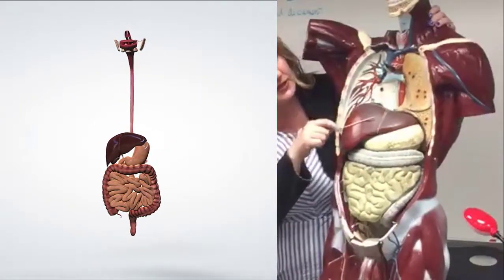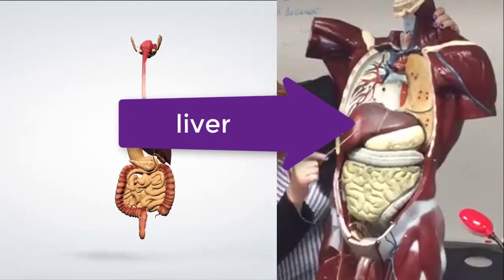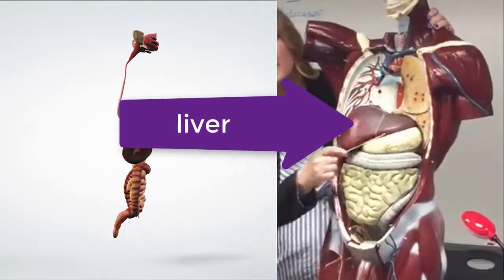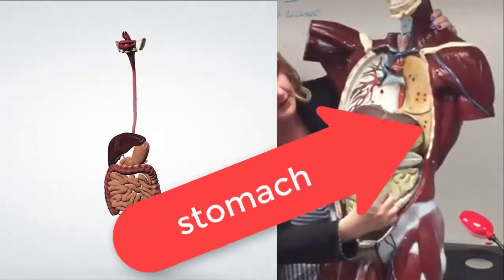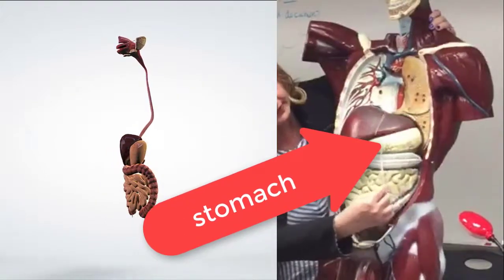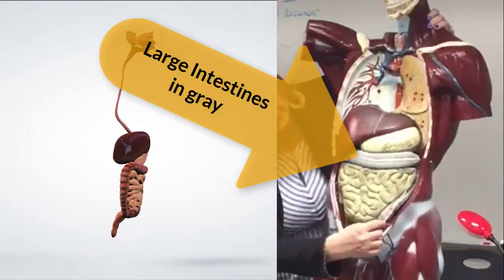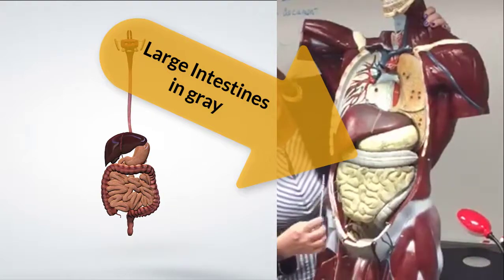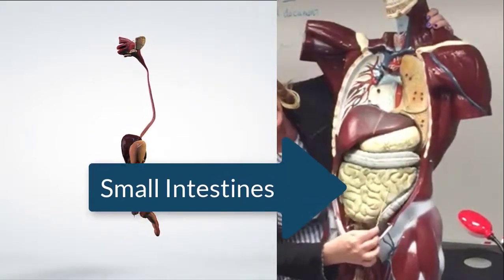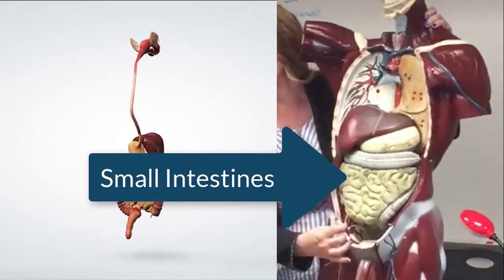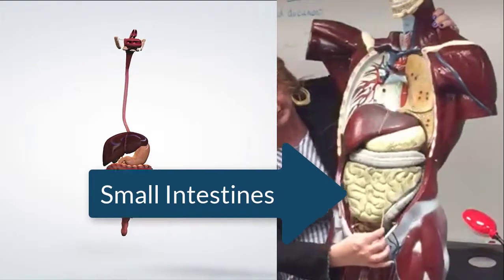This is your liver. The liver sits somewhat on top of your stomach. This is your stomach here. All of this in gray is your large intestine, and all of this brownish stuff is small intestine.